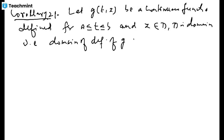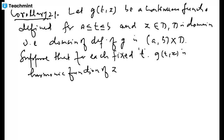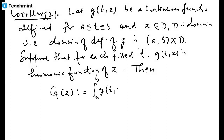Further suppose that for each fixed t, g(t, z) is a harmonic function of z. Then the function capital G(z) defined by G(z) = ∫ₐᵇ g(t, z) dt for z ∈ D is also harmonic. To show capital G is harmonic, we show it satisfies the mean value property.